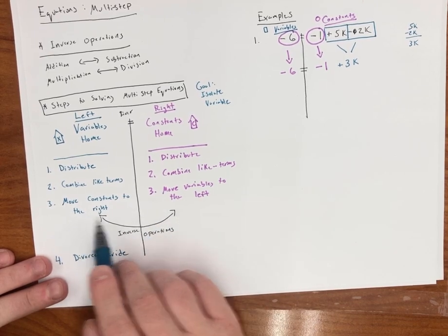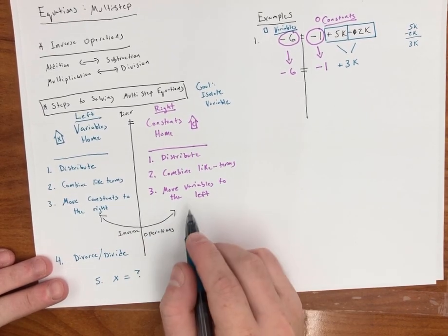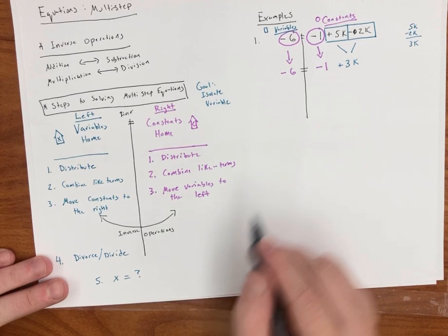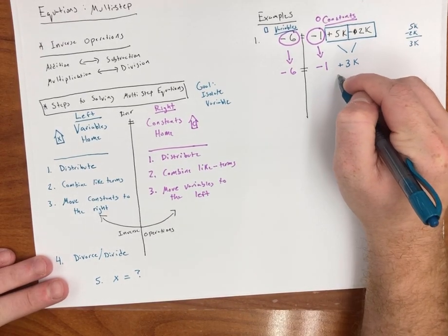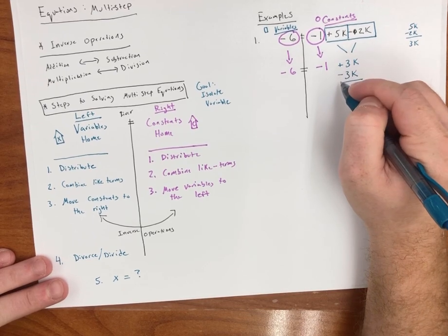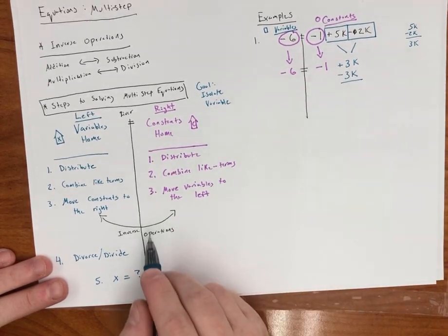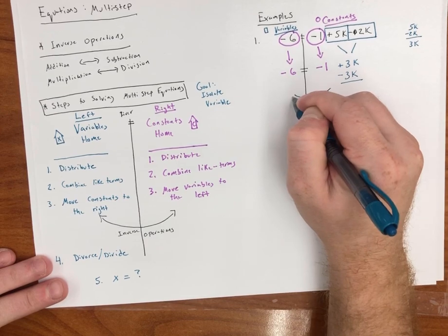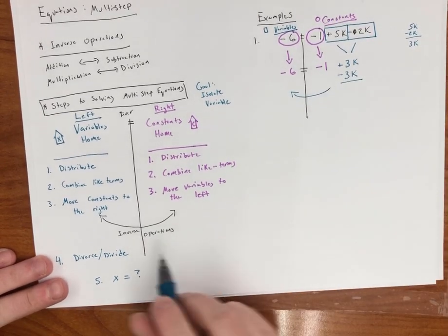Now we're moving our constants to the right and our variables to the left. So let's start with the variables. I want to subtract 3k because I'm adding 3k. Remember, I'm going across the river. So if I'm going across the river, I have to subtract 3k.